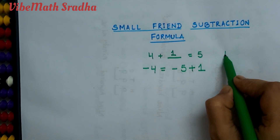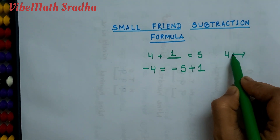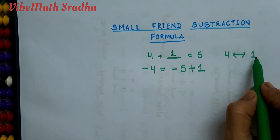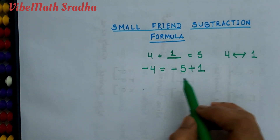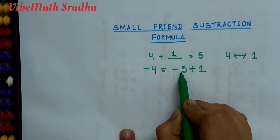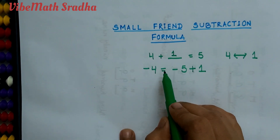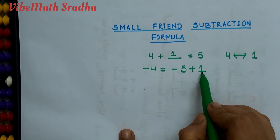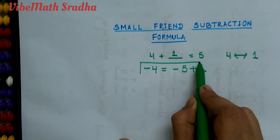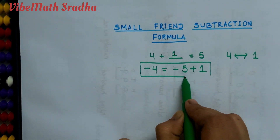Here 4 and 1 are the small friends of each other. 4 is the small friend of 1, and 1 is the small friend of 4. If we need to subtract 4, we have to subtract 5, then add the small friend of 4, that is 1. So here is our small friend formula for subtraction of 4.